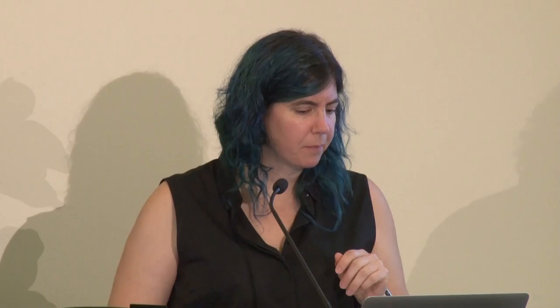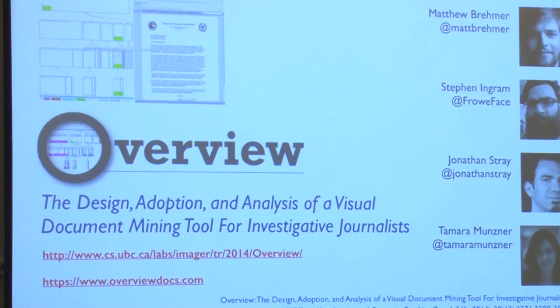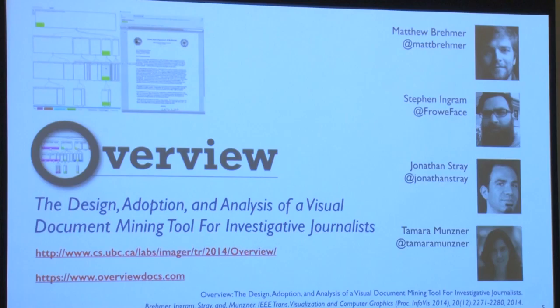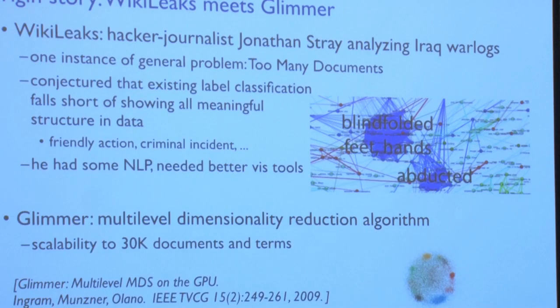The first vignette is a visualization tool for investigative reporting: Overview, a system for visual document mining for investigative journalists. This was a collaboration between two students in my own lab, Matt Bramer and Steven Ingram, and Jonathan Stray, who is sitting right up there and will be talking in the very next session. This was really my introduction to the world of journalism.